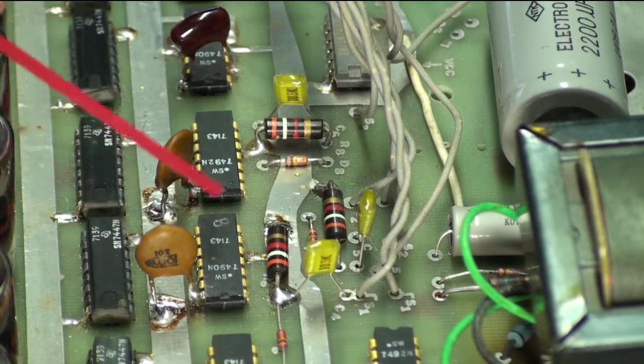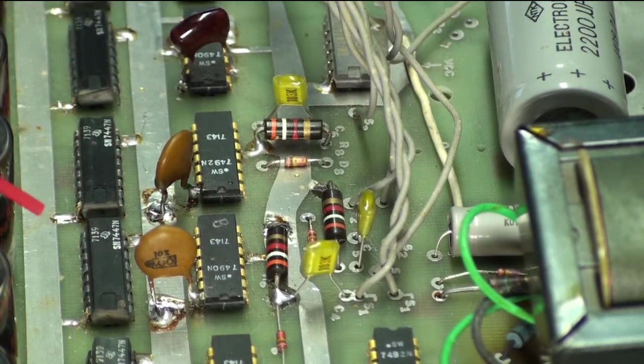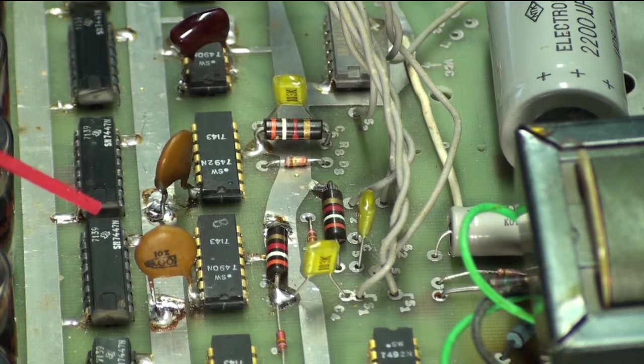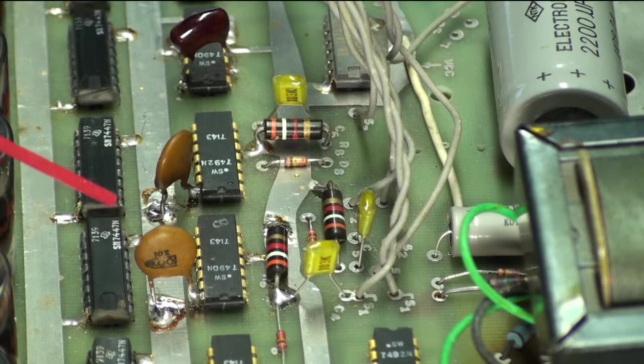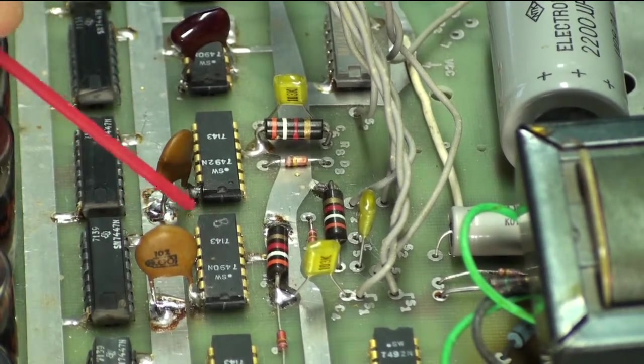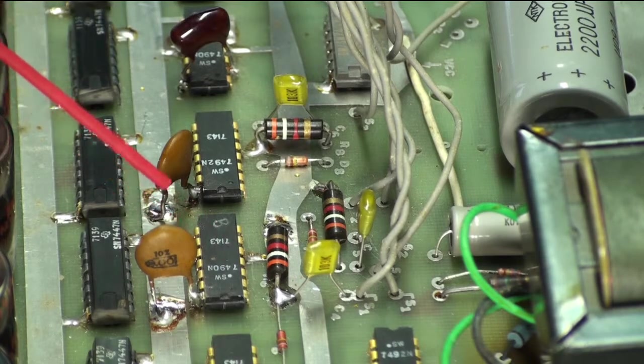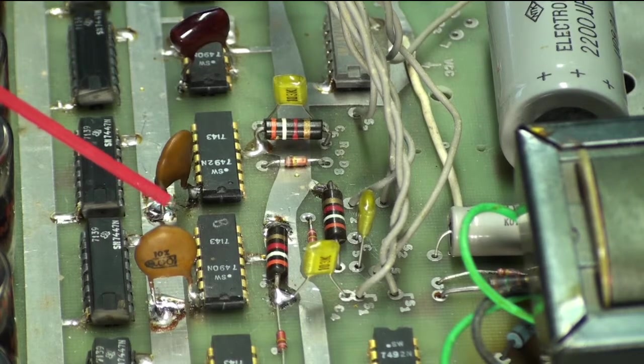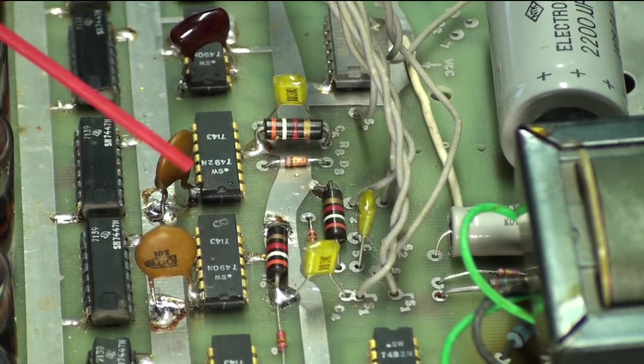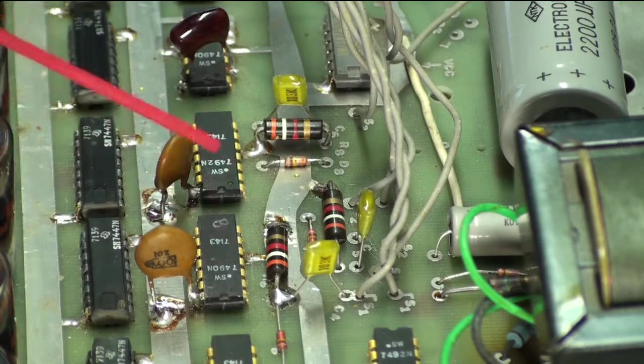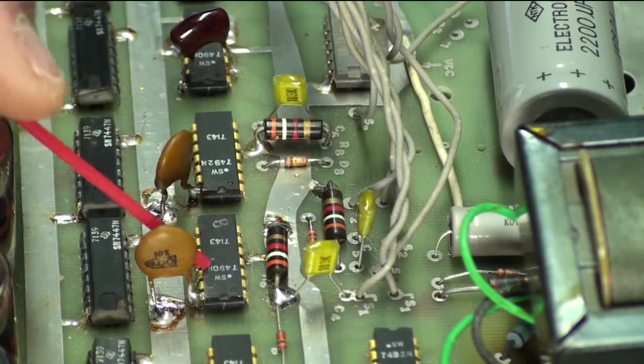I then decided to examine all the traces underneath to make sure there was no bad solder joints or anything. I couldn't find anything wrong with it. I don't have a schematic for this, but I was able to find the chip pinouts and did the best I could to trace them around. I just couldn't see anything wrong.